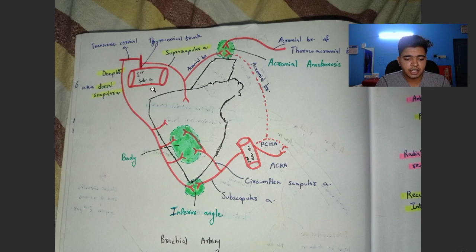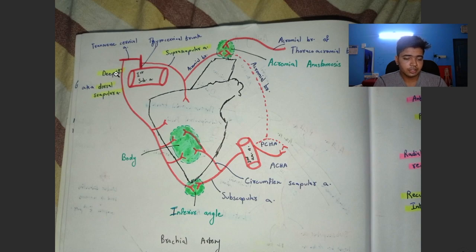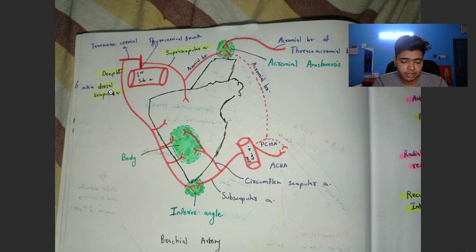Another branch from the thyrocervical trunk is the transverse cervical artery. From the transverse cervical artery there are two branches: one is the superficial branch and another is the deep branch. The deep branch runs along the medial side of the scapula, supplies the body of the scapula, and runs to the inferior angle. The deep branch is otherwise known as the dorsal scapular artery.